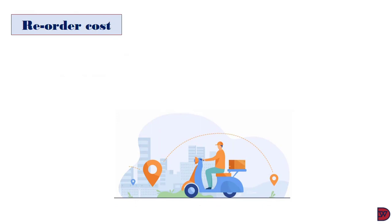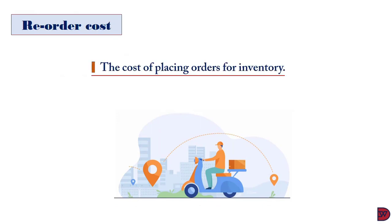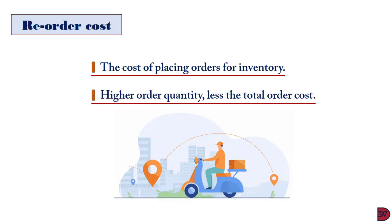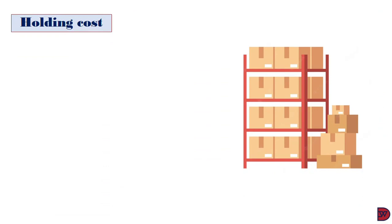The second cost is the reorder cost. This is the cost of placing orders and having them delivered. The administrative time and transportation expenses are all examples of a reorder cost. If there is a fixed amount payable on each order, then the higher the quantity in an order, the fewer the total number of orders in a particular year, leading to a reduced total annual reorder cost.